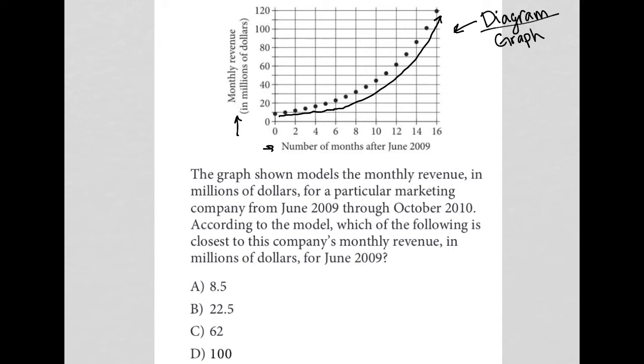The question says the graph shown models the monthly revenue in millions of dollars for a particular marketing company from June 2009 through October 2010. According to the model, which of the following is closest to this company's monthly revenue in millions of dollars for June 2009?